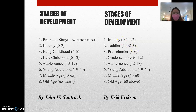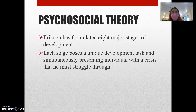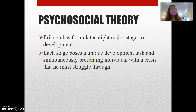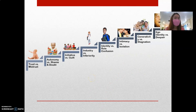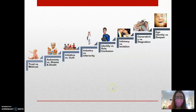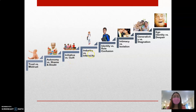Now let us discuss Eric Erikson's psychosocial theory. This theory talks about eight major stages of development, and each stage poses a unique developmental task while simultaneously presenting the individual with a crisis that must be struggled through. The stages, presented as a ladder, are: trust versus mistrust; autonomy versus shame and doubt; initiative versus guilt; industry versus inferiority; identity versus role confusion; intimacy versus isolation; generativity versus stagnation; and ego integrity versus despair.